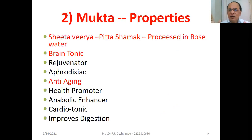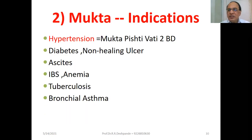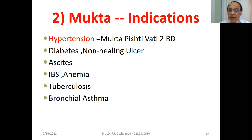Mukta properties: Sheetavirya, Pitta-Shamak. Processed in rose water — Gulab Jal. It is a brain tonic; anxiety and tension are reduced. Rejuvenator, boosting energy, aphrodisiac, anti-aging, health promoter, anabolic enhancer, nutritive, cardio tonic — very good for the heart muscles — and it improves digestion. Mukta is commonly used; I use it many times for treating hypertension. Mukta-Pishti-Vati is available in the market — a little bit costly, but two tablets morning and two tablets evening, regularly for one to three months, reduces anxiety, tension, and hypertension.